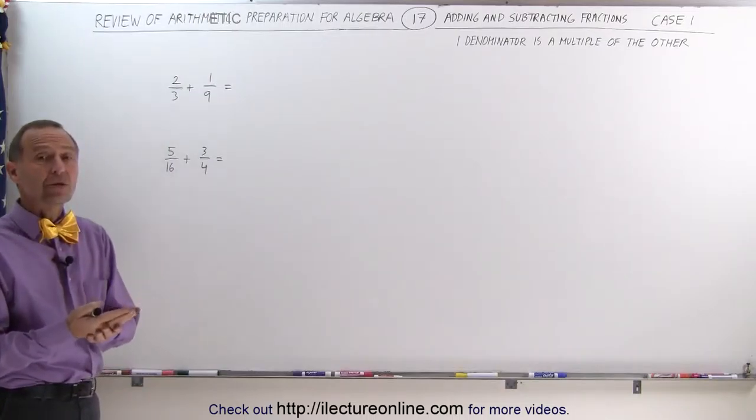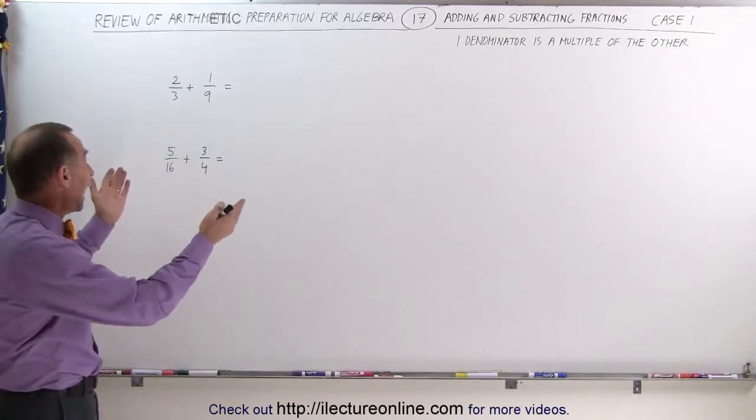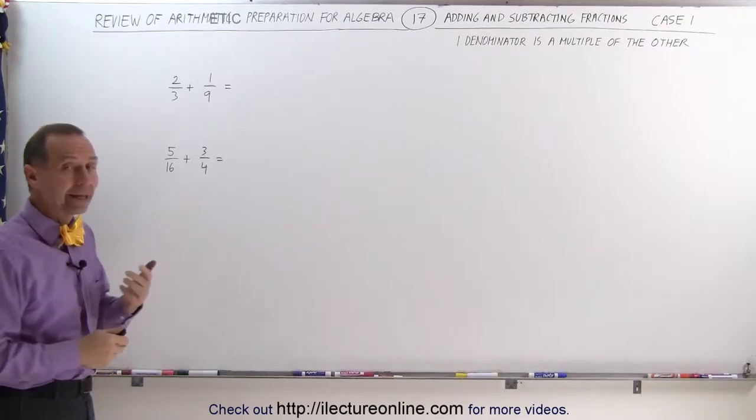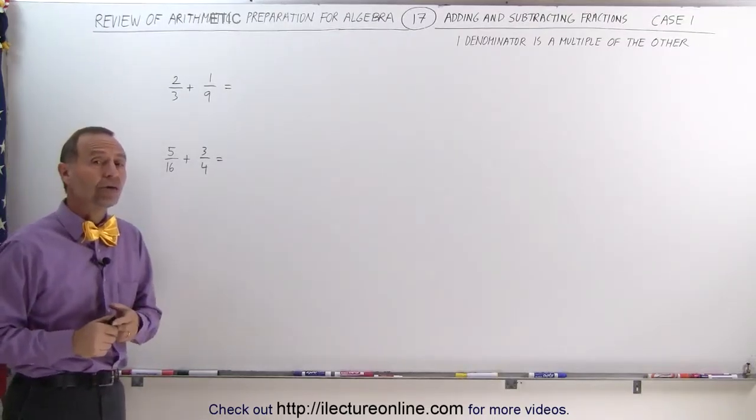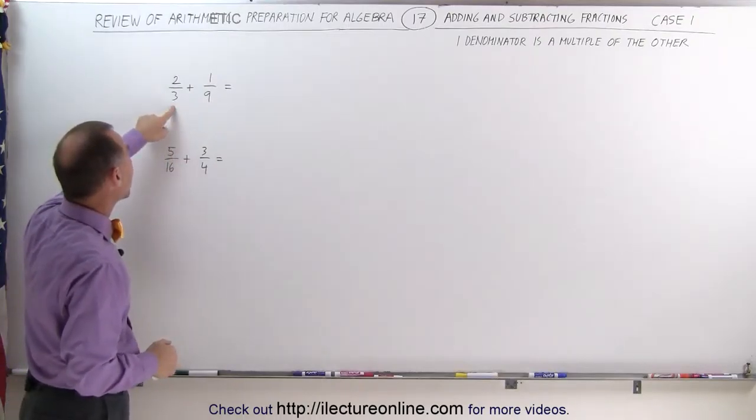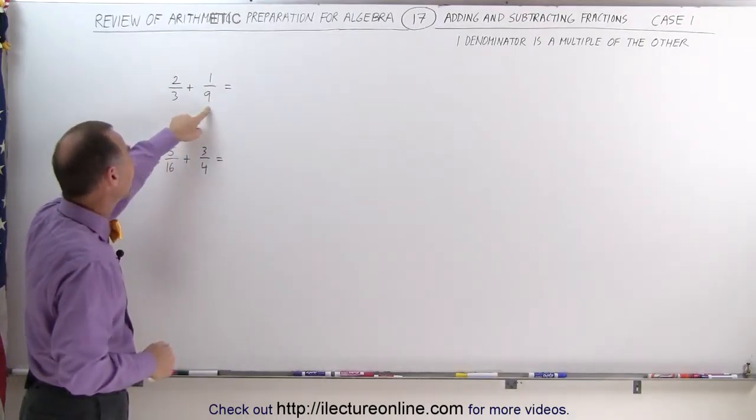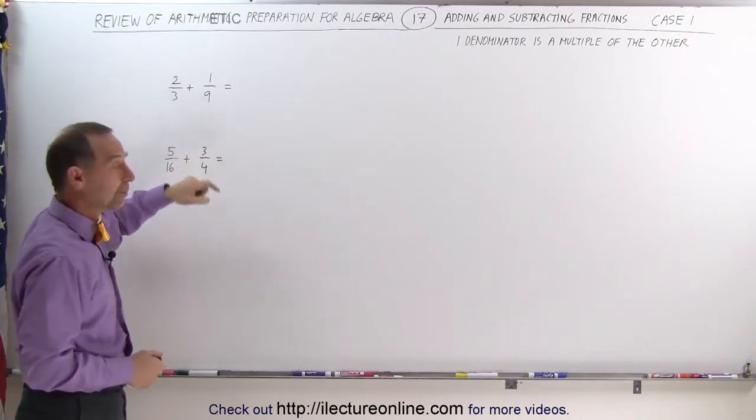So you can't use the technique that we used in the previous video where you simply added the numerators together. You cannot do that here. You'll get the wrong answer. The second thing you should notice is that the smaller of the two denominators can evenly fit into the larger denominator. 3 goes into 9 three times.